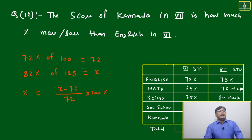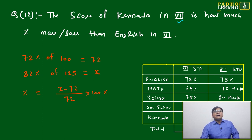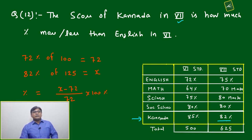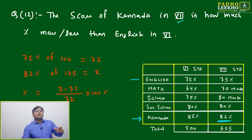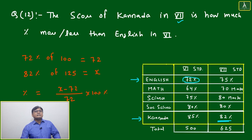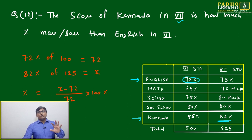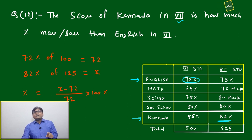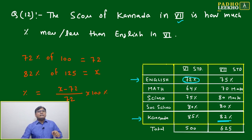Moving to the next question: find the score of Kannada in seventh — here it is, seventh. This data is how much percentage more or less than English in sixth? We have to look at these two data points: 82 percent with respect to 125, and 72 percent with respect to 100. The base changes in each case, so we have to take care of that.